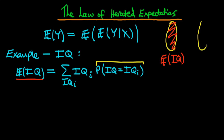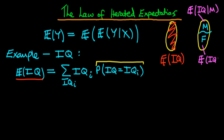Another way would be to break it up into subpopulations. We could define those individuals who are male and those who are female, and then work out the average level of IQ given that an individual is male — the expectation of IQ given male — and also the average level of IQ given that an individual is female. Then, to work out the overall unconditional expected value of IQ, we take a weighted average of these two terms. And that is what the law of iterated expectations tells us.